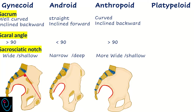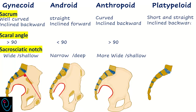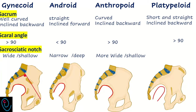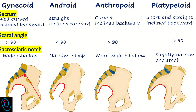In platypelloid pelvis, the sacrum is short and straight and inclined backward. The sacral angle is more than 90 degrees, and the sacrosiatic notch is slightly narrow and small.